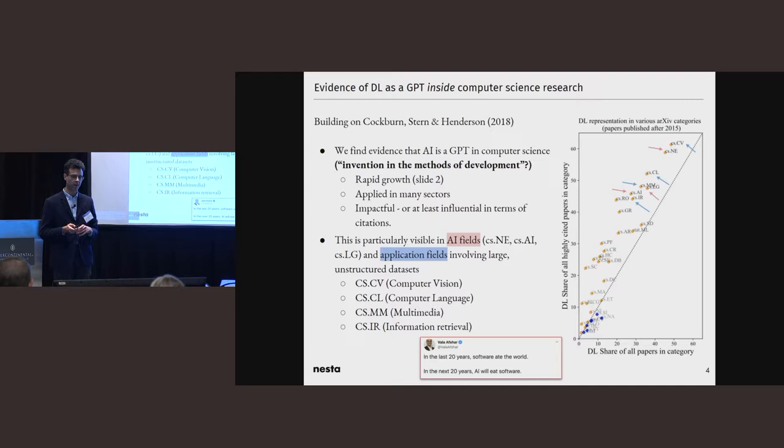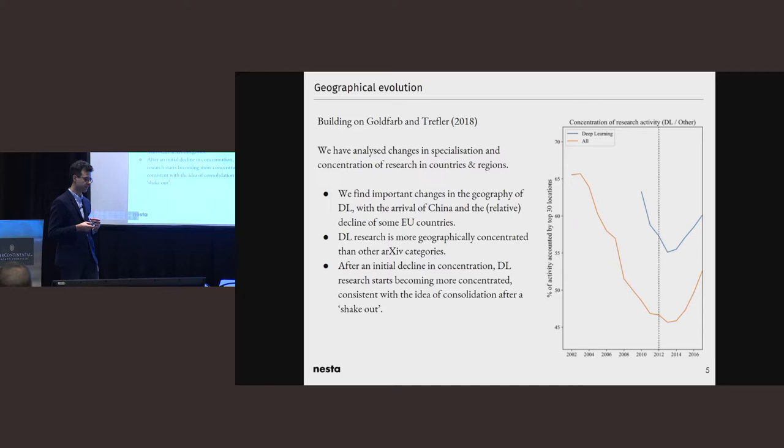So moving into the geographical part of the story. What we're interested in understanding is changes in the relative specialization of countries and regions. Do we see some places coming up, some places going down? There are lots of maps in the paper, I haven't put them here because of space and time. But what we're seeing when we look at countries is this arrival of China in deep learning research, we see this arrival of Singapore, this arrival of Canada, US catching up after being behind a bit at the beginning, and EU countries falling behind, which is consistent with the rhetoric in the EU about the AI race.